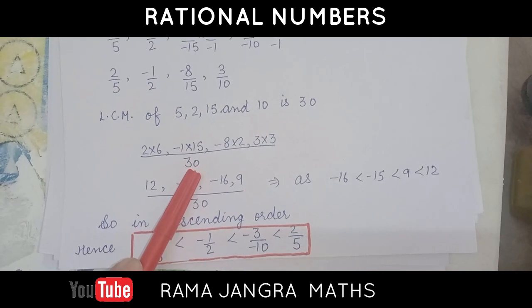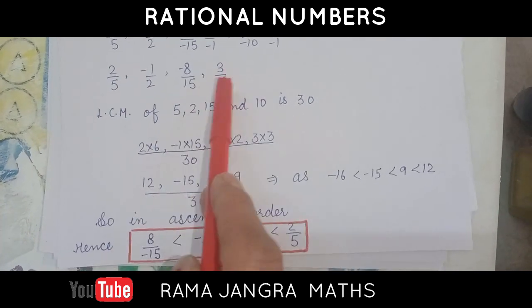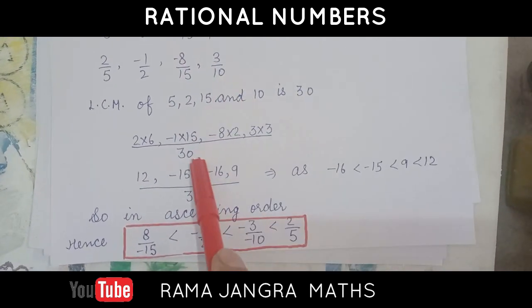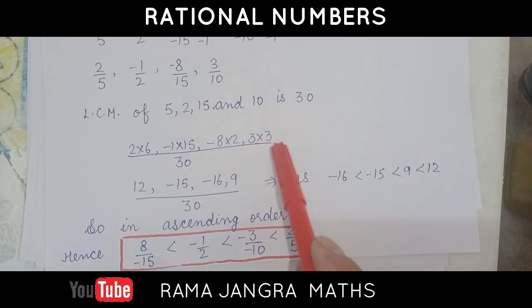Now, divide by 2, which gives 15, multiply by minus 1. Here, divide by 2, minus 8, multiply by 2. Here, divide by 3, multiply by 3, which is 9.